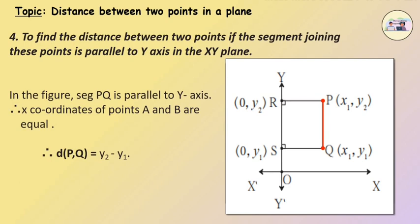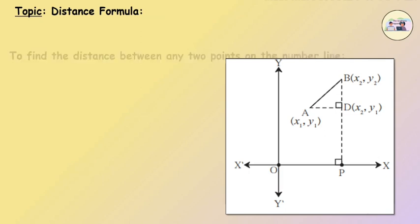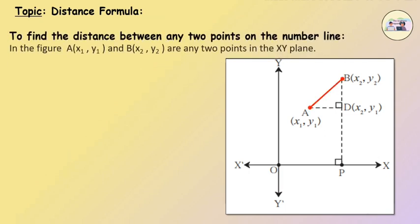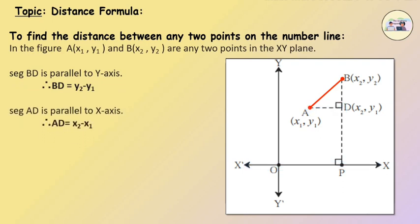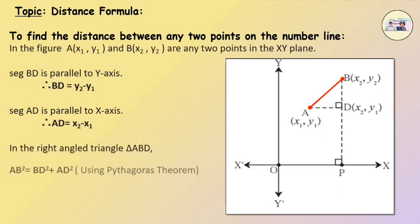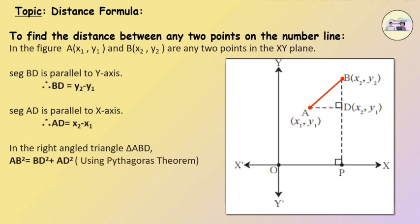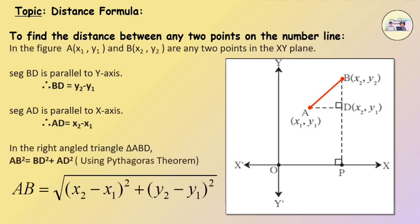Distance Formula: To find the distance between any two points in the xy plane. In the figure, A and B are any two points. Segment BD is parallel to the y-axis, therefore BD equals y2 minus y1. Segment AD is parallel to the x-axis, therefore AD equals x2 minus x1. In the right-angled triangle ABD, AB squared equals BD squared plus AD squared by the Pythagorean theorem. Therefore, AB equals the square root of (x2 minus x1) squared plus (y2 minus y1) squared. This is known as the distance formula.